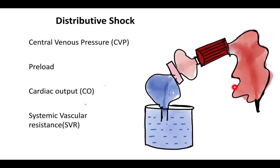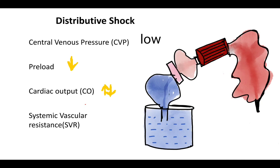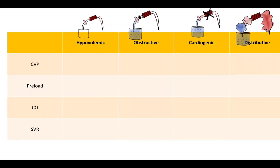In distributive shock, all vessels — systemic and pulmonary — are dilated. Blood pools in the periphery and does not reach the heart. CVP is low because despite the presence of blood, the dilated vessel walls generate no pressure. Preload is low. Cardiac output can be low or high depending on how much blood reaches the heart. Critically, SVR is low — the hallmark of distributive shock.